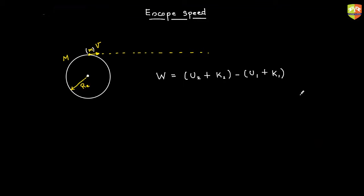The potential energy when the object reaches infinity is zero. When the mass is at the surface of the Earth being launched, it will have some potential energy. Work done is zero because there is no external force other than gravity, and we are already accounting for gravity via potential energy, so we don't double-count it. K2 is zero — point two is at infinity and point one is the surface of the Earth.